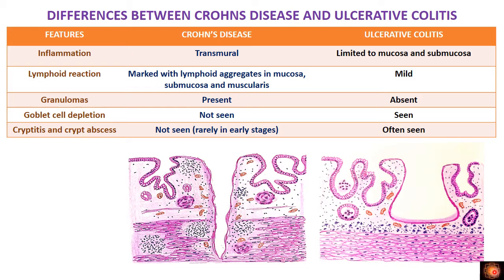Looking at the microscopic differences: in Crohn's disease we have deep fissuring ulcers extending into the muscularis, whereas in ulcerative colitis the broad-based ulcers are confined to the mucosa and submucosa. The inflammatory reaction in Crohn's is transmural — the inflammatory infiltrate extends from the mucosa and submucosa into the muscularis — while in ulcerative colitis it is confined to the mucosa and submucosa.